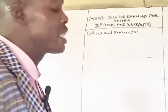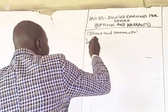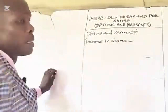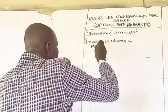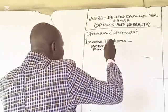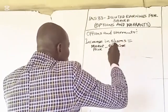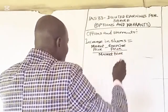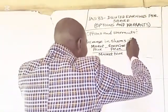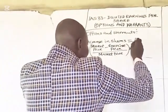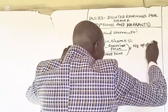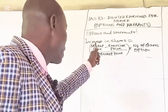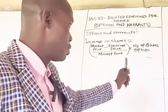If you want to calculate the increase in shares — incremental shares — caused by the options, the formula to use is: market price minus exercise price, over market price (the market price is the same as the fair value), then multiply by the number of shares under option. This gives you the amount by which the existing shares will increase any time there is a share option.